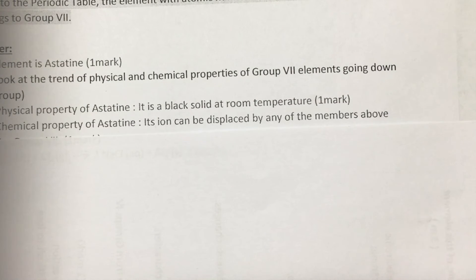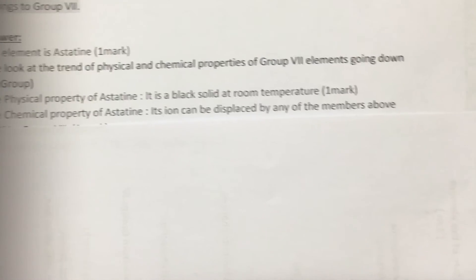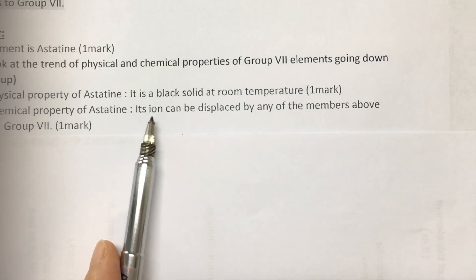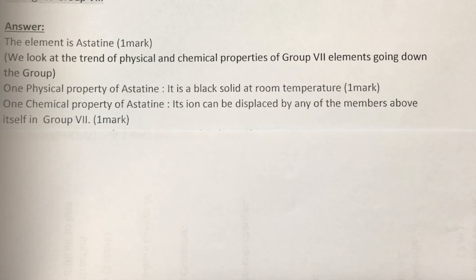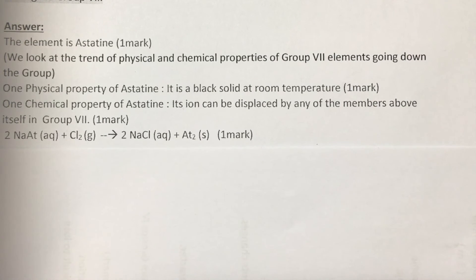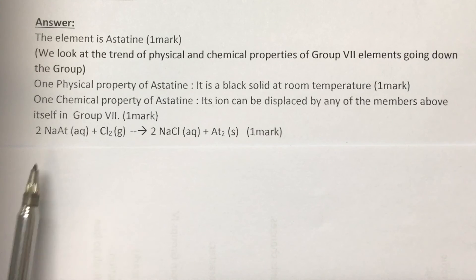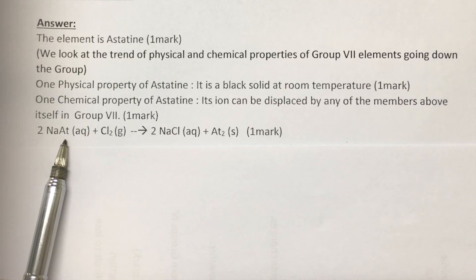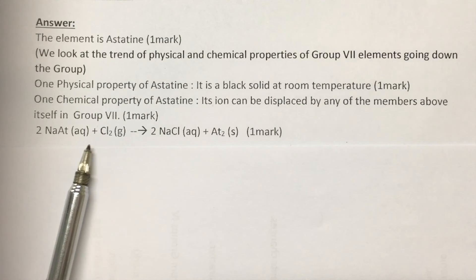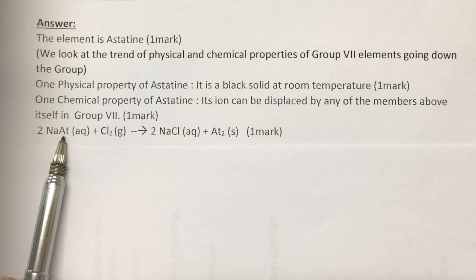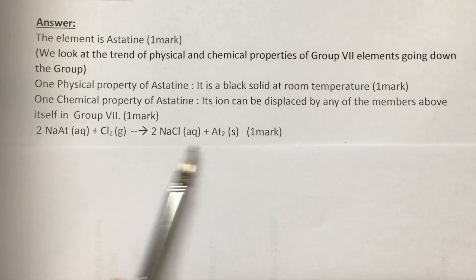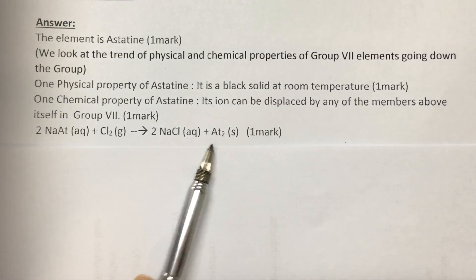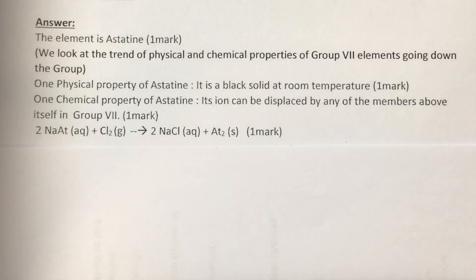Hence, for the answer, the chemical property of astatine: its ions can be displaced by any of the members above itself in group 7. And lastly, the last fourth mark, we are supposed to show the balanced chemical equation. We choose a salt with astatine - sodium astatine - we react with chlorine which is above astatine. Chlorine is able to displace astatine ion, resulting in astatine solid. And balance the equation with the state symbol - you get one mark.